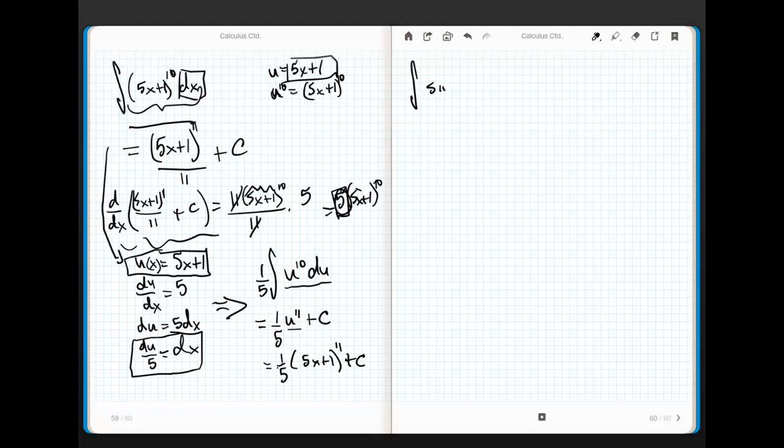All right, how about this one? Let's see, the sine of, let's just go 2x dx. The anti-derivative, you know what, I'm going to keep things clean with negatives. Let's call this the cosine instead of the sine. So I'm going to say the cos of 2x dx.